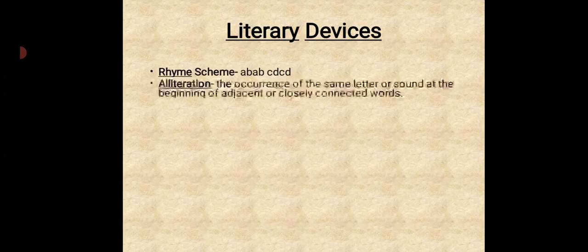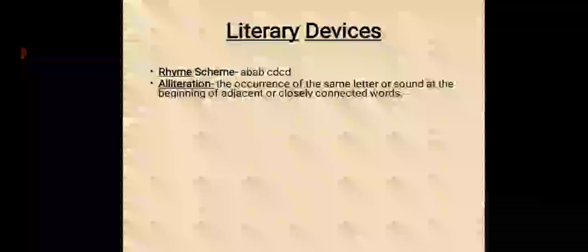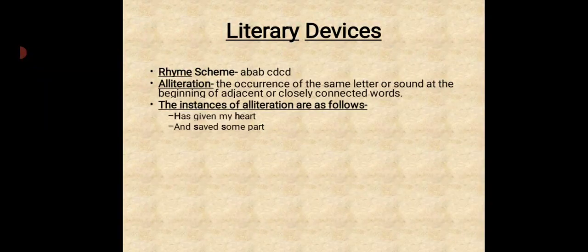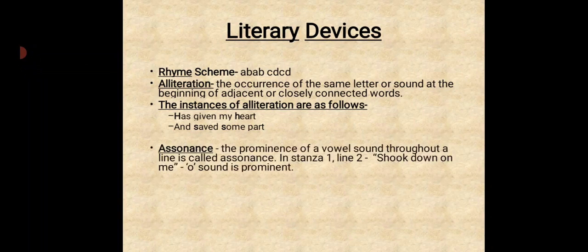Next, alliteration. The occurrence of the same letter or sound at the beginning or adjacent or closely connected words. Like has given my heart, H, and saved some part, S, S. Then we have assonance. The prominence of a vowel sound throughout a line is called assonance. So in first stanza, line number two, shook down on me. O sound is prominent.